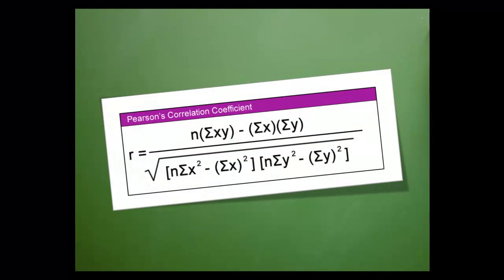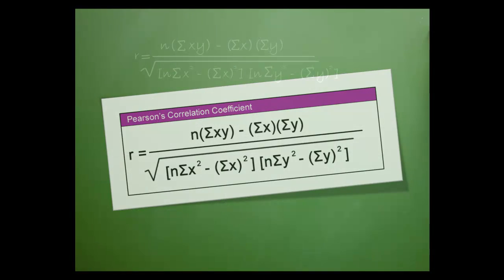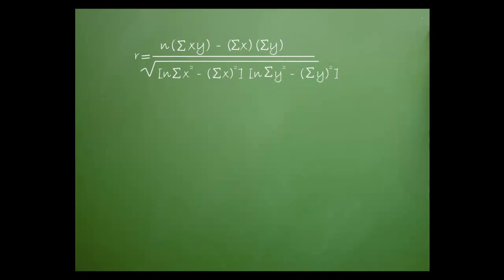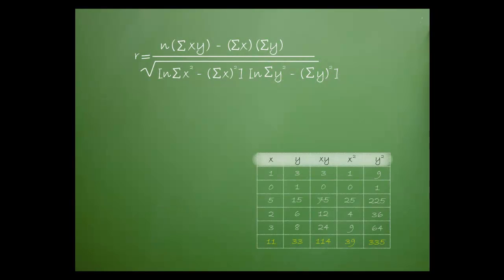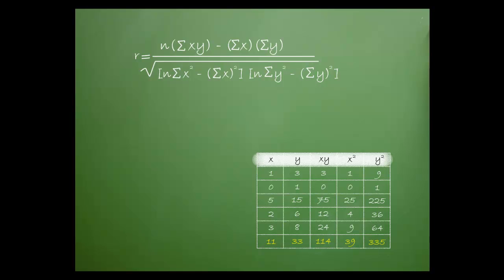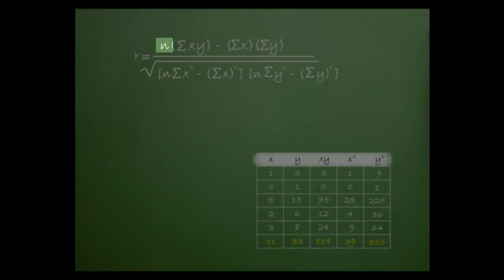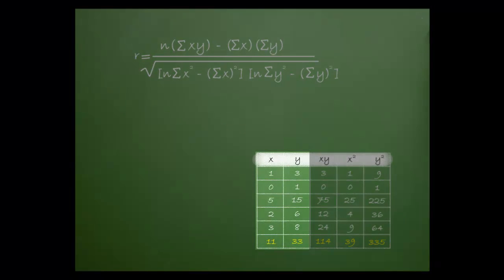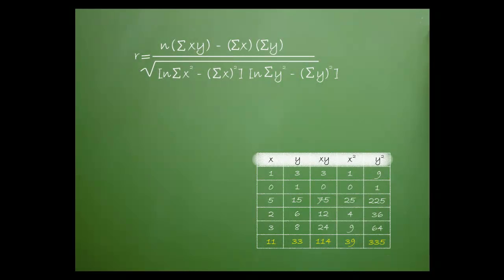Now we're ready to start entering our values into the equation. First, let's copy down our formula. Here's the chart with our values. Now let's pick the equation apart. n is the number of x's and y's that we have. In this case, it's five. We've already calculated the sum of our x values multiplied by the sum of our y values. This is the sum of the x values and this is the sum of the y values. Again, our n is five.